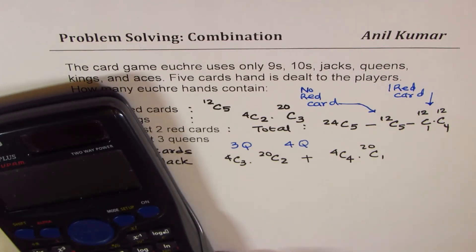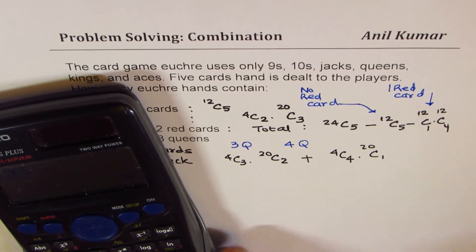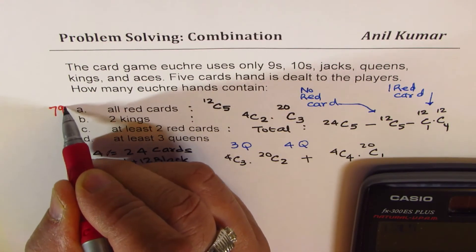So I hope you have understood the concept. So my main idea is to make you understand the concept. Now we can always use calculator to find the answers. So we have 12C5 as 792. So let me write down the first one as 792 for all red cards.